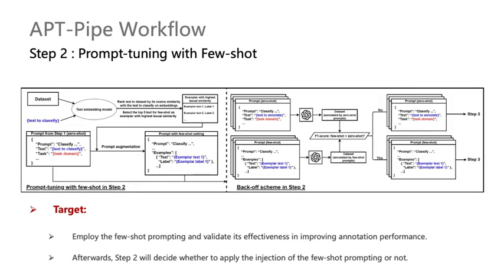In Step 2, the pipeline employs the few-shot prompting technique and evaluates its impact on annotation performance. Based on this assessment, it decides whether to integrate few-shot prompting or not.